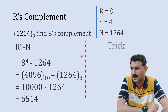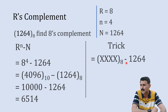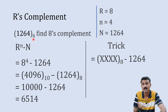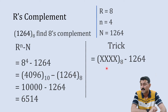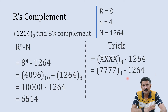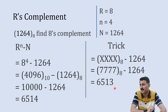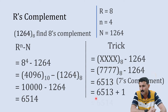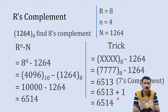Using the trick for octal: write the largest digit of octal (which is 7) four times — 7777 — and subtract 1264. Direct subtraction gives 7 minus 4 = 3, 7 minus 6 = 1, 7 minus 2 = 5, 7 minus 1 = 6, so the result is 6513. This is the 7's complement. Add 1 to get 6514, the 8's complement — matching the previous answer.